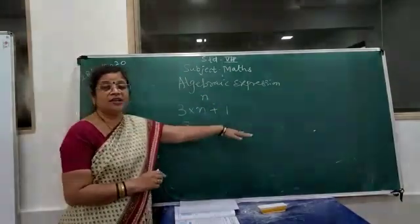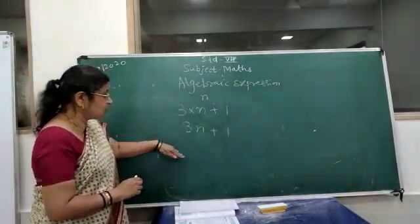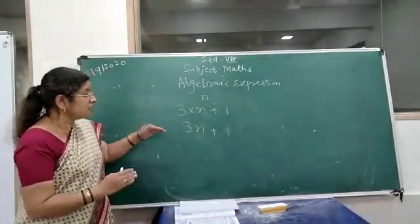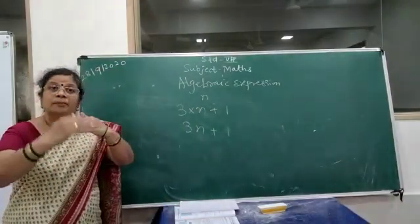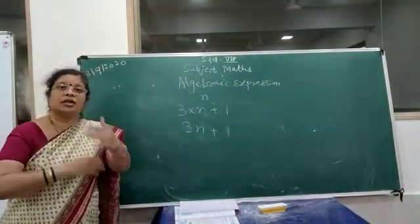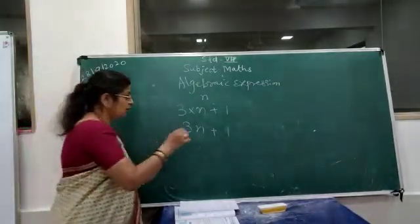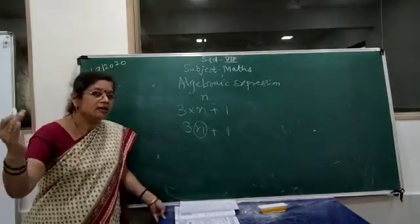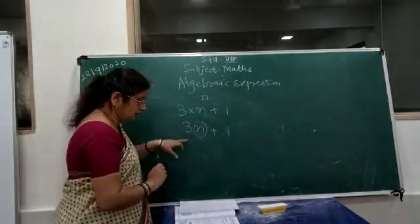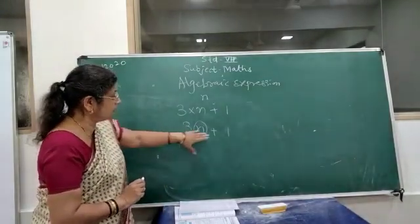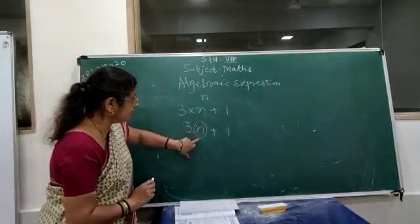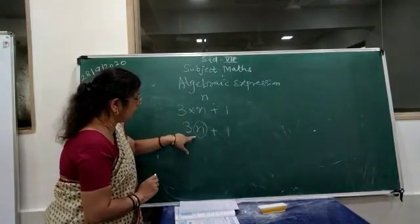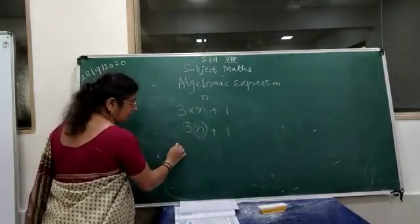In this example, 1 square, 2 squares, 3 squares are attached together — the number of squares is changing. Accordingly, the number of sticks is also changing. So this is a variable — variable means it is changing. If we don't know the number of squares, we write n in its place, and n is a variable because it is changing.